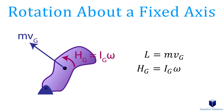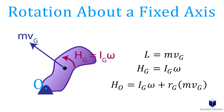Instead of finding the angular momentum at the center of mass, let's say we find it about point O. We can use this equation to figure it out. The first part is the angular momentum about the center of mass, and then we add the perpendicular distance to the linear momentum vector times the linear momentum. These two added together give us the angular momentum about point O.